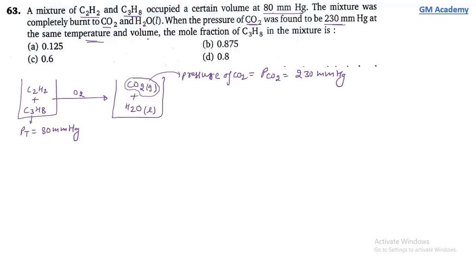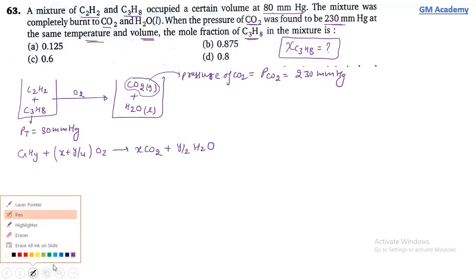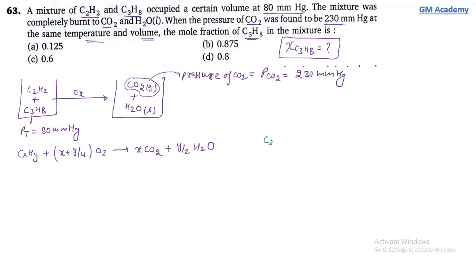Using general combustion: CₓHᵧ + (x + y/4)O₂ → xCO₂ + (y/2)H₂O. For C₂H₂: C₂H₂ + 5/2 O₂ → 2CO₂ + H₂O. For C₃H₈: C₃H₈ + 5O₂ → 3CO₂ + 4H₂O.